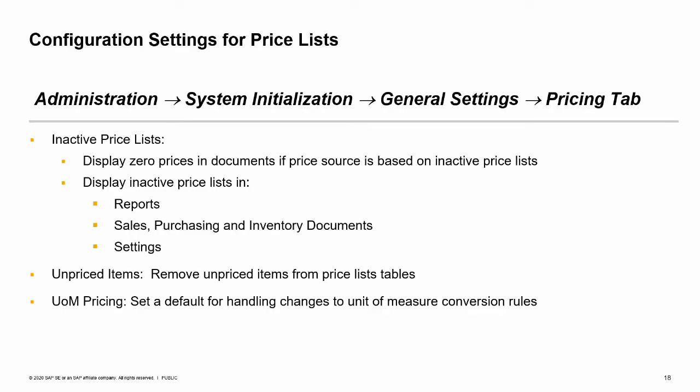There are a number of controls for pricing on the Pricing tab in General Settings. These controls cover three main areas: inactive price lists, unpriced items, and unit of measure pricing. You can control whether prices are displayed in documents when a price source is based on an inactive price list for three types of prices. Three separate checkboxes control the display for special prices for business partners, period and volume discounts, and price list prices.